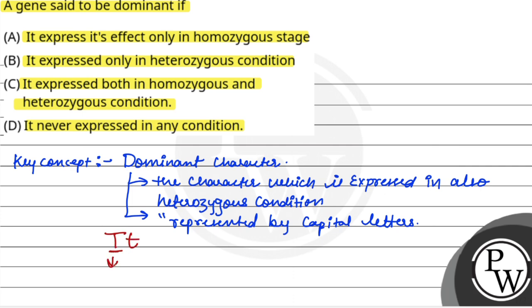In this example, this is for tall and this is for dwarf, and this is for homozygous condition. This is for tall character, it is dominant in dwarf character.